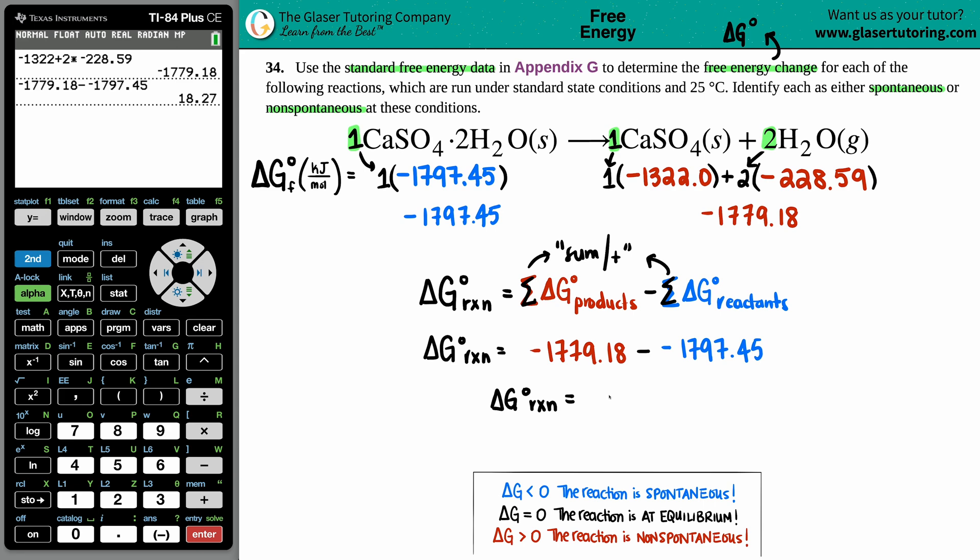The units for your free energy change are in kilojoules, because you're taking your ΔG formation in kilojoules per mole and multiplying it by those coefficients in front. Those are mole values, so the moles cancel out and you're just left with kilojoules. So the ΔG value is 18.27 kilojoules.